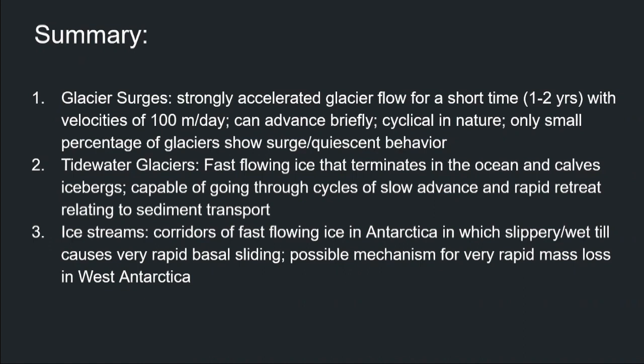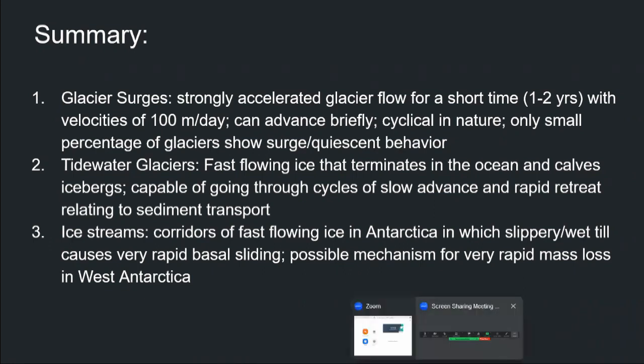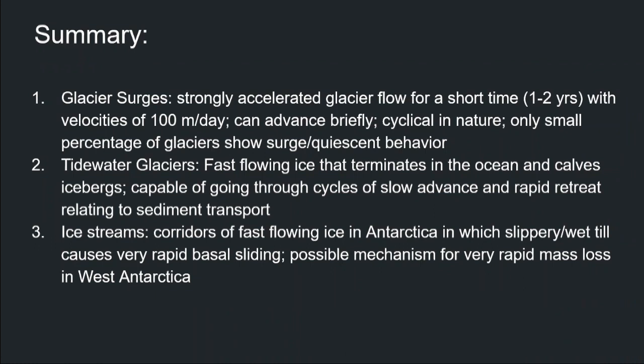And finally, ice streams are corridors of fast-flowing ice in Antarctica, overlying slippery or wet till, which causes very fast basal sliding. Those represent a possible mechanism for dramatic mass loss in West Antarctica if those ice streams are intruded by seawater at the bottom of the ice sheet. That's all for today. I hope the lecture was clear enough and that you learned new things. I'll see you for next lecture where we will leave the subglacial and hydrological part of glaciology and go more into the dating of the ice and how ice interacts with the environment.